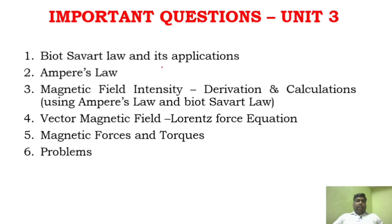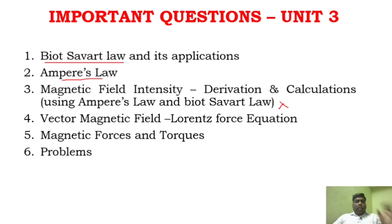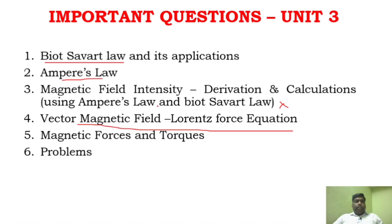For Unit 3, go through at least 5 questions. Biot-Savart law and its application, Ampere's law — these questions are very very important. Magnetic field intensity derivation and calculation — both using Ampere's law and Biot-Savart law — you should be able to write. The fourth question is on vector magnetic potential and force equation. You can also go through magnetic forces and torques. There are many problems asked from this unit.